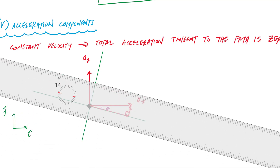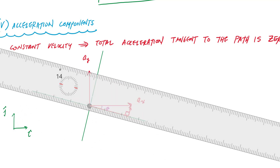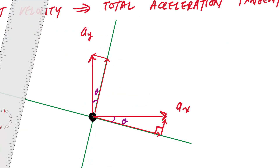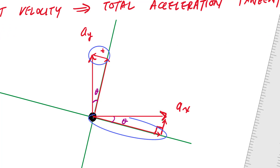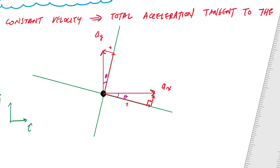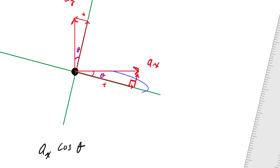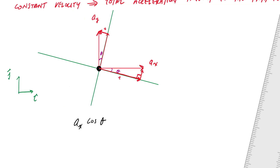Similarly, I break ay into components parallel and perpendicular to the tangent. The tangential component of ax is ax times cosine theta, pointing to the right, and the tangential component of ay is ay times sine theta, pointing to the left. Setting the sum of tangential acceleration components equal to zero gives equation one: ax cosine theta minus ay sine theta equals zero. I know theta but have two unknowns, so I need a second equation.